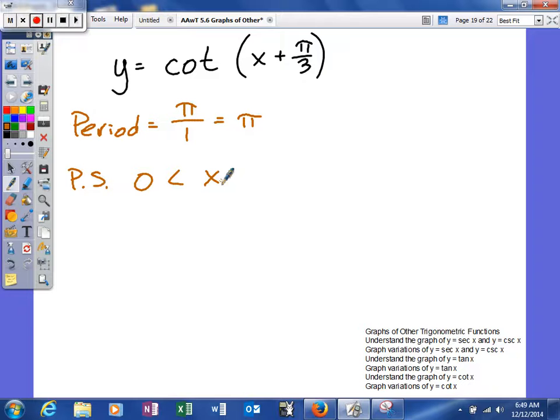For your phase shift, it's going to be different. Make sure that you're aware of that. With tangent, we use negative pi-halves and pi-halves. And this one, you're going to do zero and pi. We're going to solve for our x. So I'll subtract pi-thirds. When we do that, we will get negative pi-thirds here, which is less than x, which is less than 2 pi-thirds.